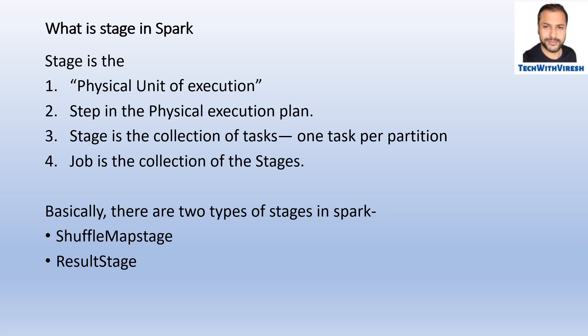There are two categories of stages in the Spark world: the shuffle map stage and the result stage. At a high level, the shuffle map stage relates to the map part of map-reduce. The shuffle map stage performs different transformations, and the output goes as input to the result stage. The result stage is initiated by the action you call in a particular Spark job.